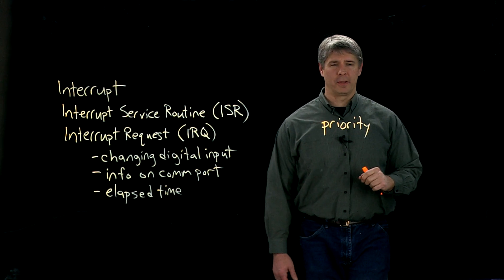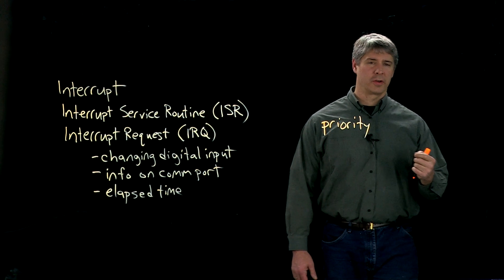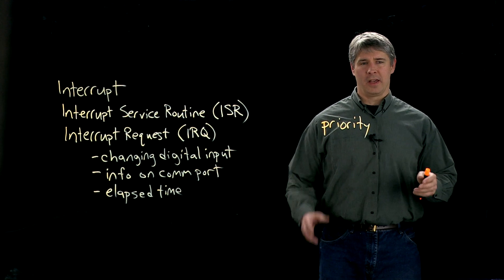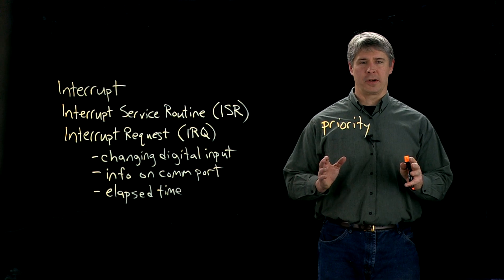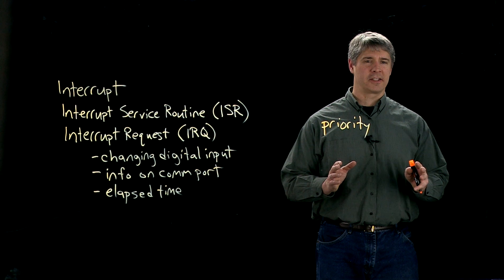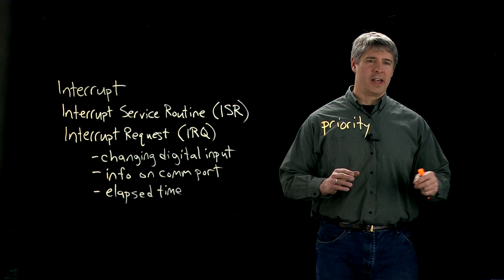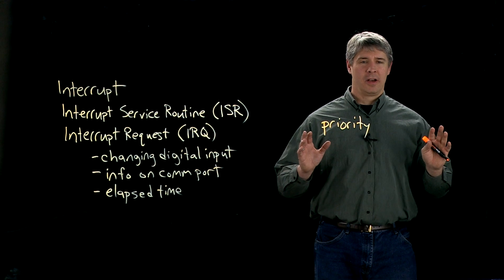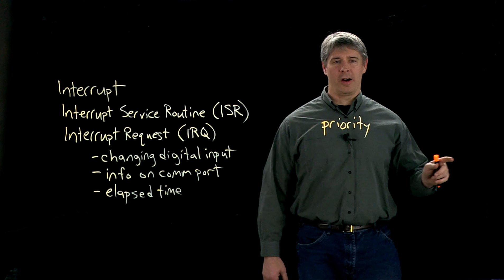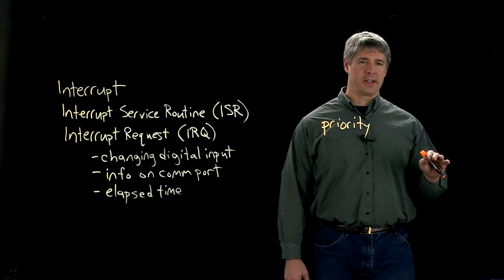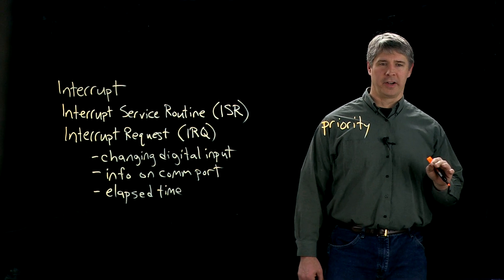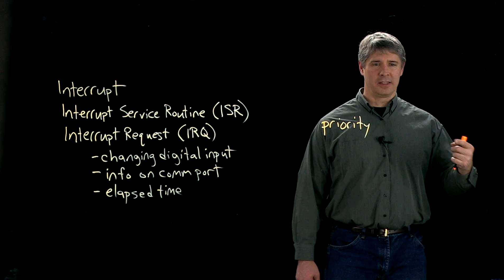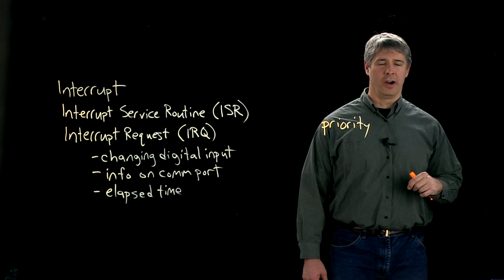For example, if the controller has higher priority than the alarm, then if the controller interrupt service routine is currently executing and the alarm signals that something has happened, the alarm is going to have to wait until we finish the controller interrupt service routine, and after that we can attend to the alarm.